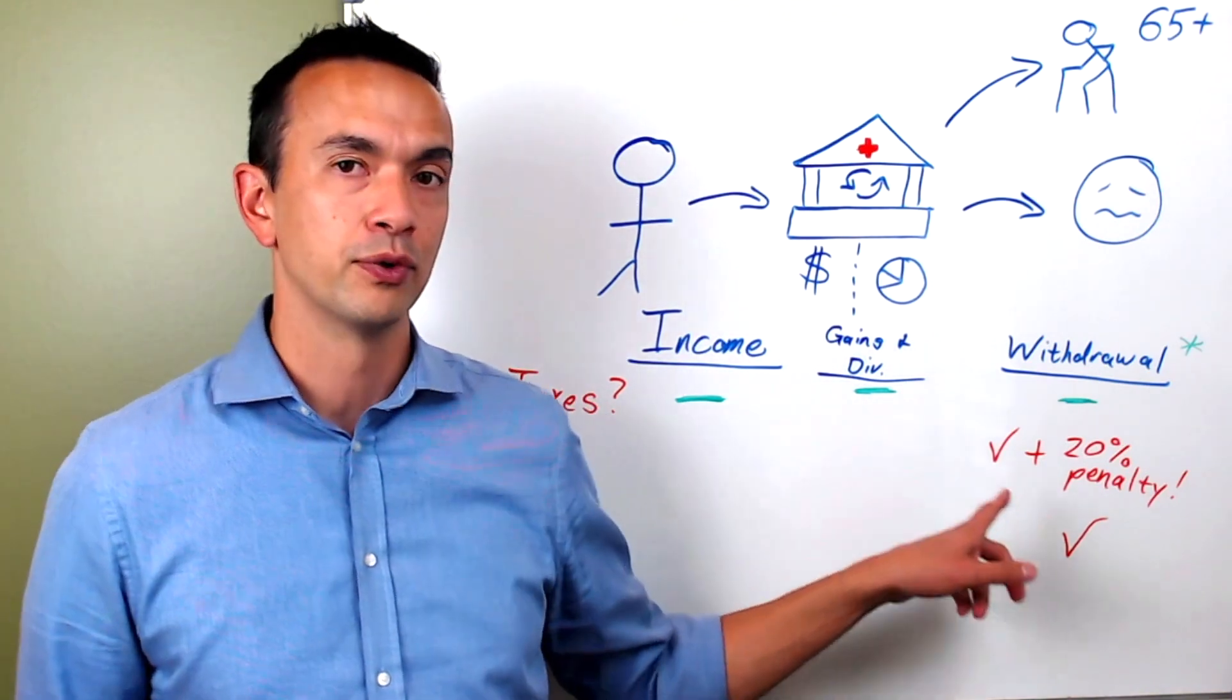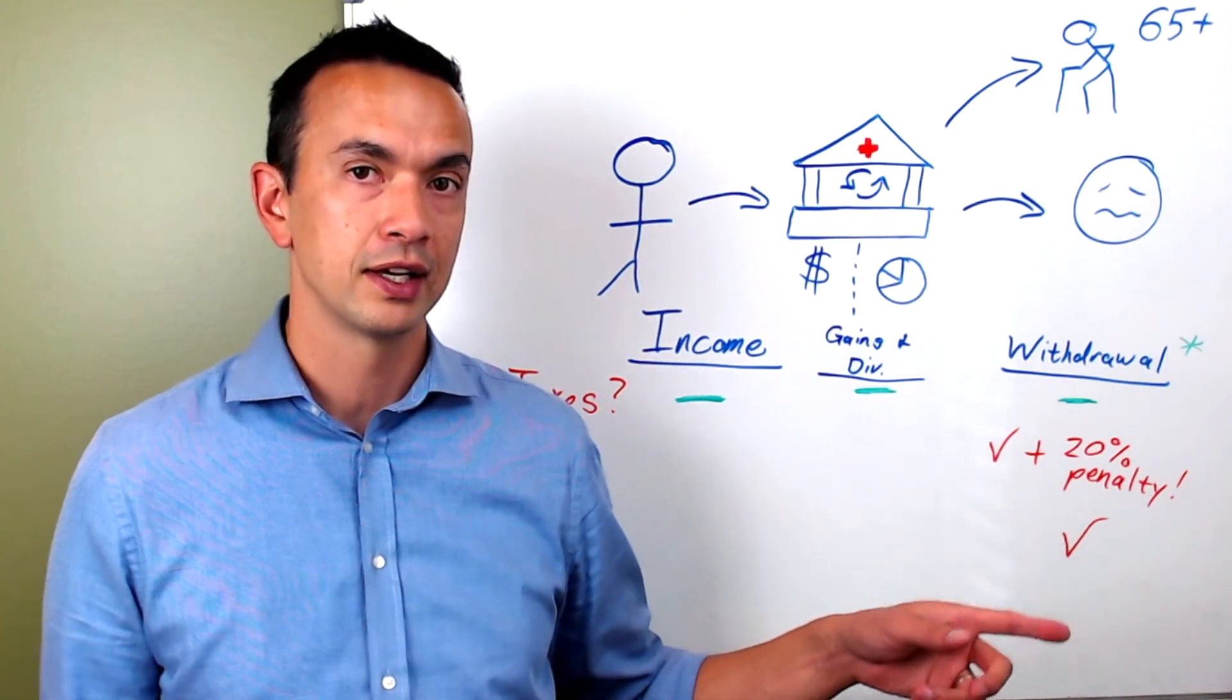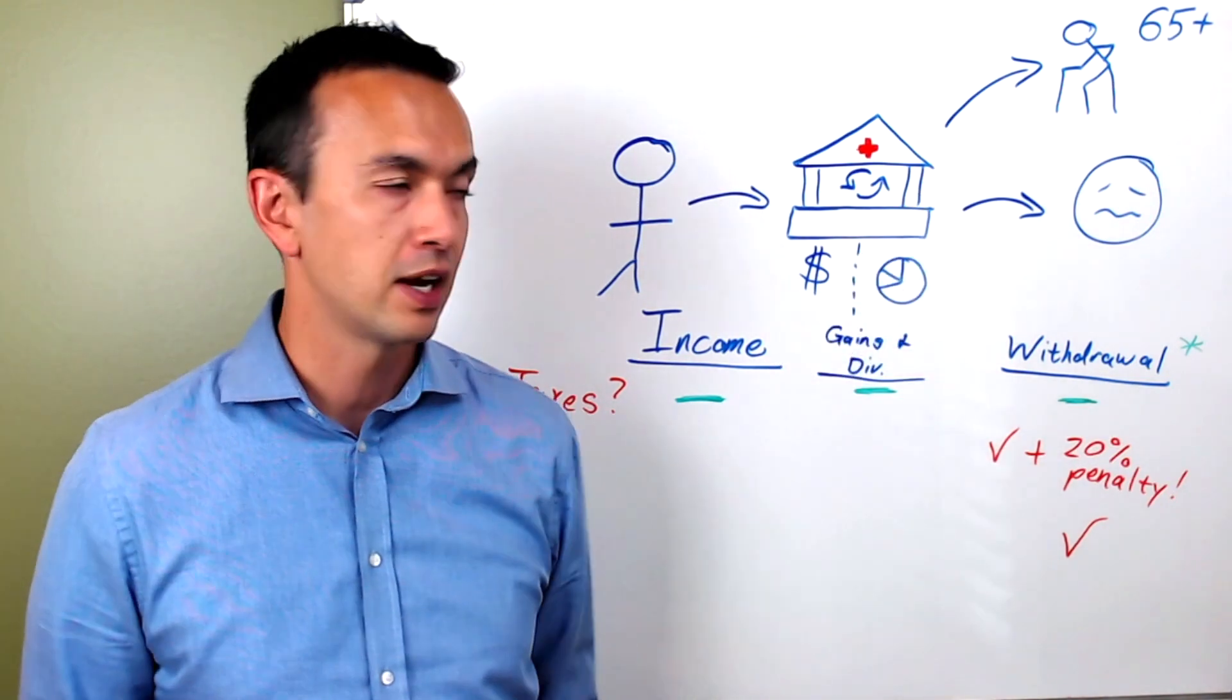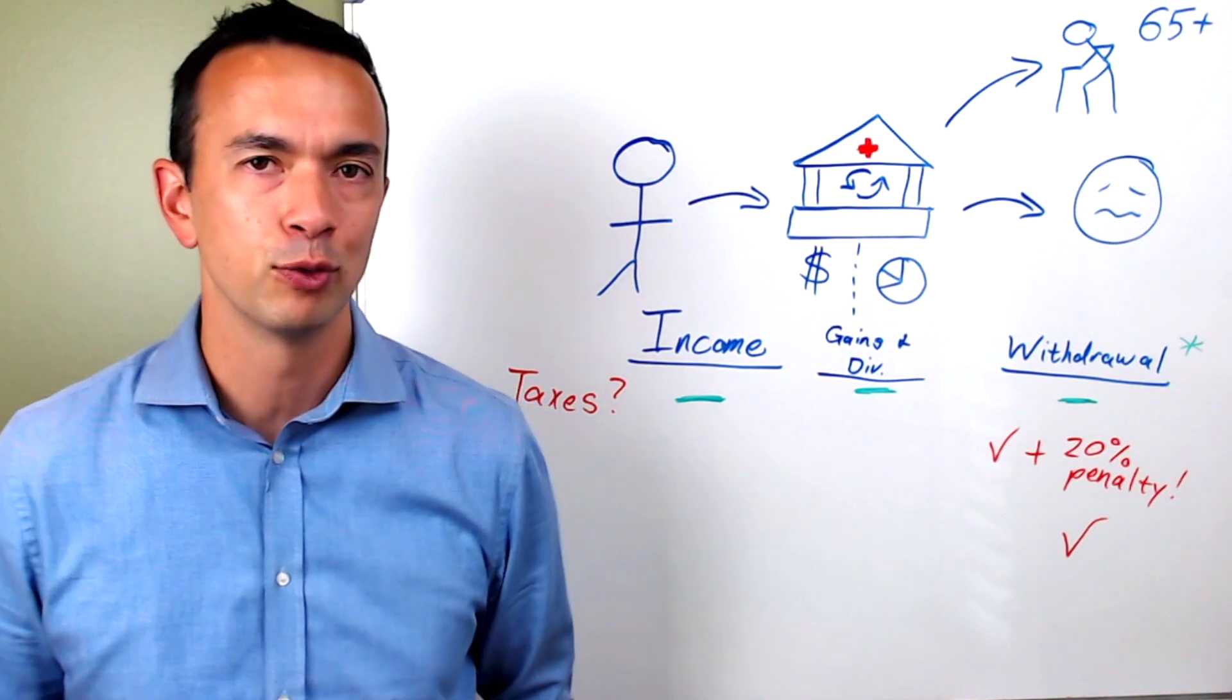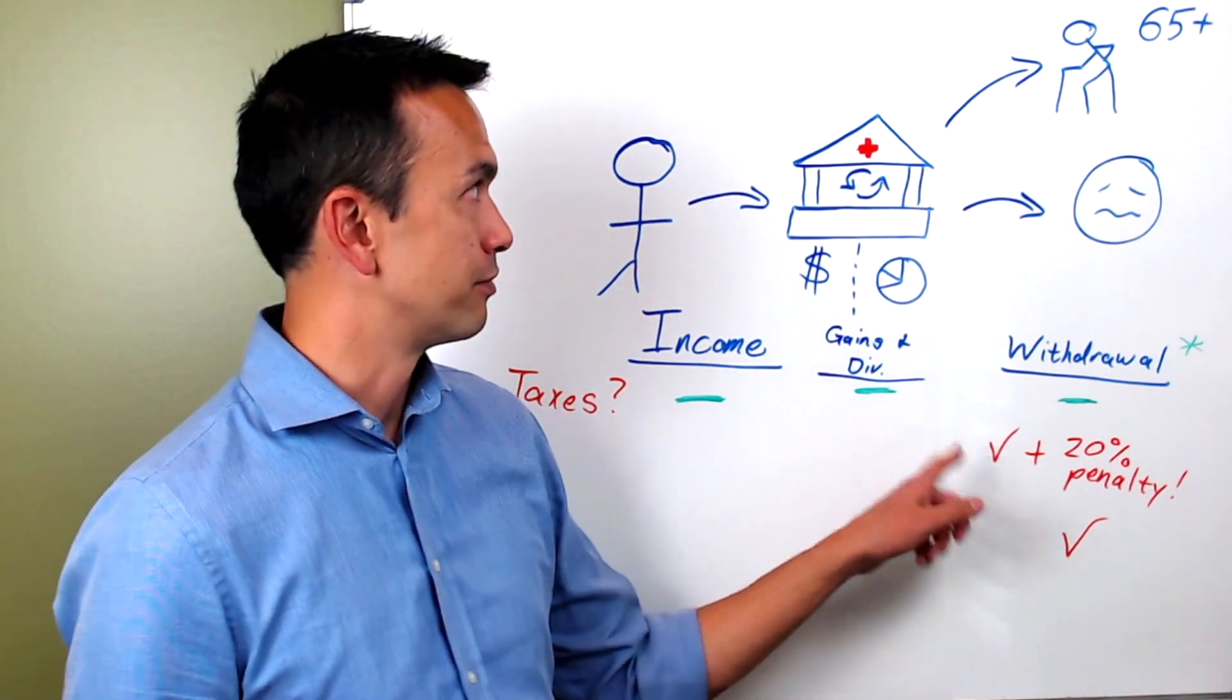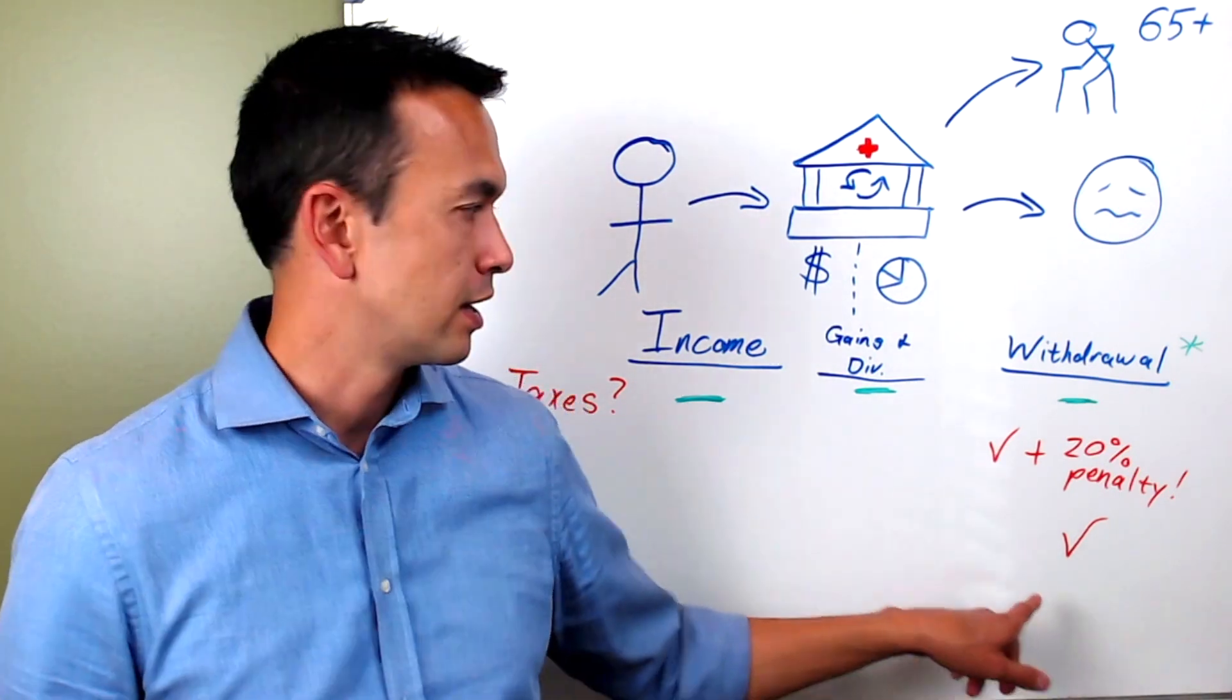If you use money for non-qualified expenses and you're not yet 65, then you are going to be taxed and then also get a pretty hefty 20% penalty.